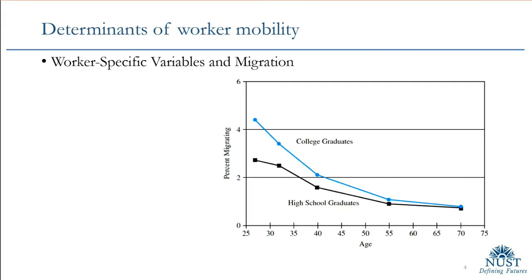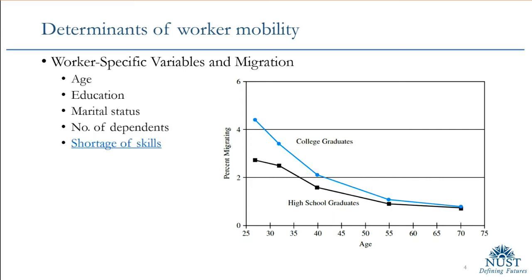The previous examples were region-specific — characteristics of both home and host places affecting our decision to migrate. Now we look at worker-specific variables. Some of the factors could be age, education, marital status, number of dependents, and shortage of skills. These are all important factors that play a role in the decision to migrate.